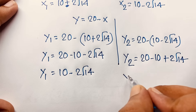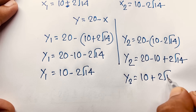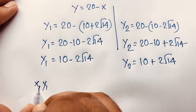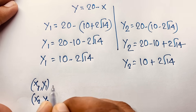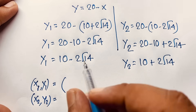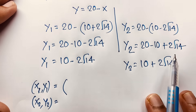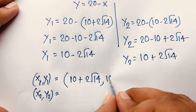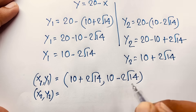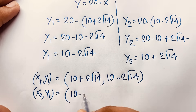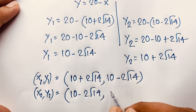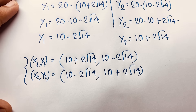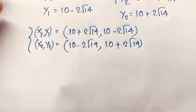So our final answer pairs (x₁, y₁) and (x₂, y₂) are: when x₁ equals 10 plus 2 square root 14, then y₁ equals 10 minus 2 square root 14; and when x₂ equals 10 minus 2 square root 14, then y₂ equals 10 plus 2 square root 14. This is our final answer to this math olympiad question.